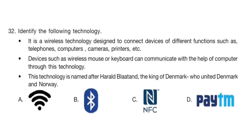Question 32. Identify the following technology. It is a wireless technology designed to connect devices of different functions such as telephones, computers, cameras, printers, etc. Devices such as a wireless mouse or keyboard can communicate with the help of a computer through this technology. This technology is named after Harald Bluetooth, the king of Denmark, who united Denmark and Norway. The correct answer is option B: Bluetooth.